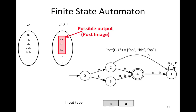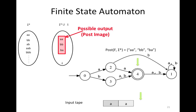How does the automata work? Let's assume the input to the automata is the string 'aa'. The automata starts from the start state, reads the first input character, and takes a transition to state 2. Then it reads the second character and moves to state 4. We end up in an accepting state — the double circle — having finished reading the input. In this case, we say the automata accepts the string 'aa', meaning 'aa' is an element in the language of this automata.